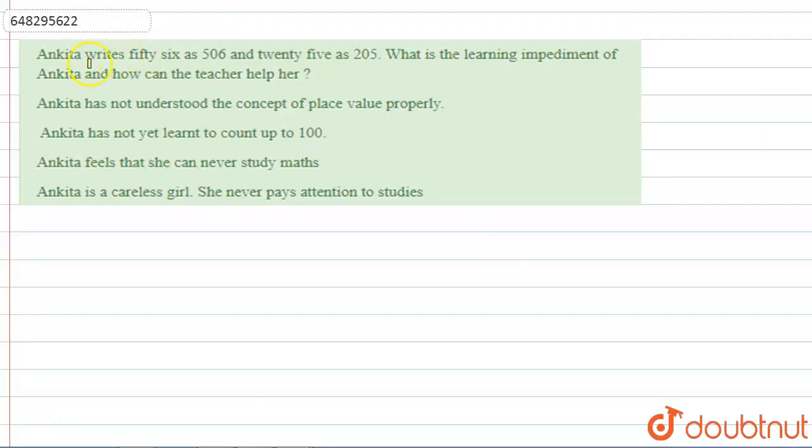Hello students, here we have a question. The question is: Ankita writes 56 as 506 and 25 as 205. What is the learning impediment of Ankita and how can the teacher help her?